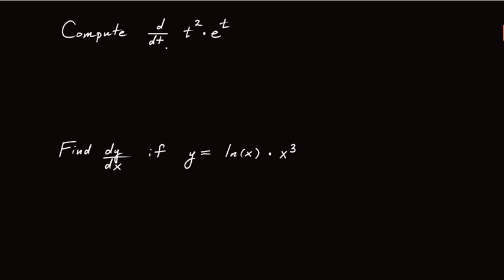In this first example, we're asked to compute the derivative of t squared times e to the t. So in this case, our first function we'll call f — that's t squared — our second function g, that's e to the t. The product rule tells us that the derivative of f times g equals the derivative of f times g, plus f times the derivative of g. If I take the derivative of f, that's t squared, that gives 2t.